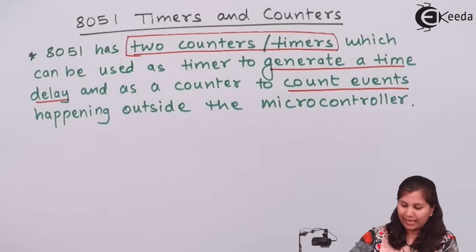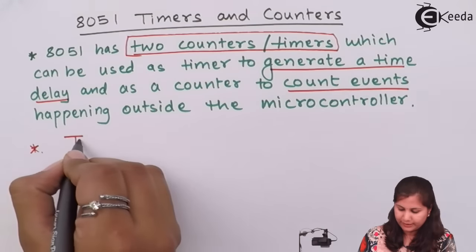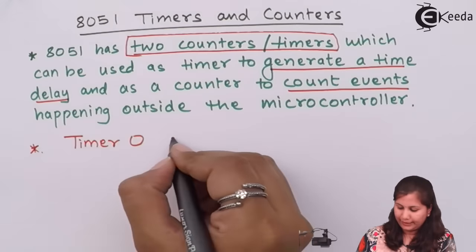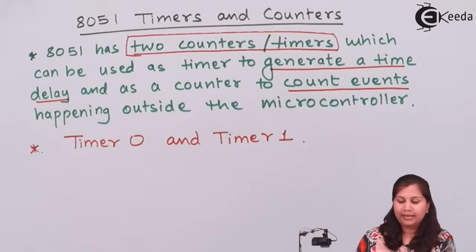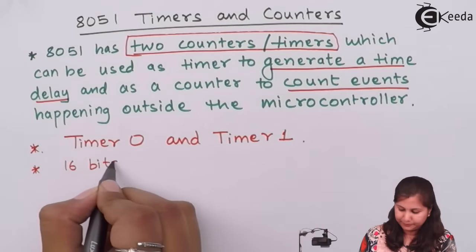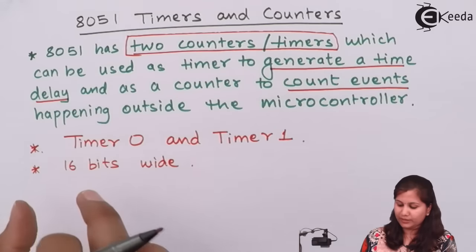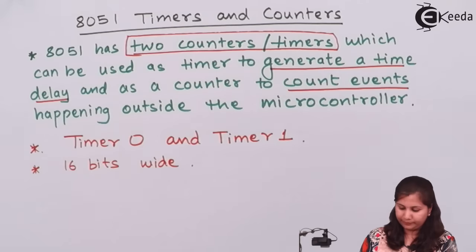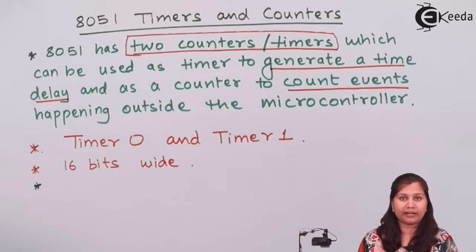Because the 8051 has two counters and timers, these two timers are Timer 0 and Timer 1. They can be used either as a timer or as a counter. These timers are 16 bits wide, meaning Timer 0 has 16 bits and Timer 1 also has 16 bits. Because each timer is 16 bits, it is divided into 8 bits each.